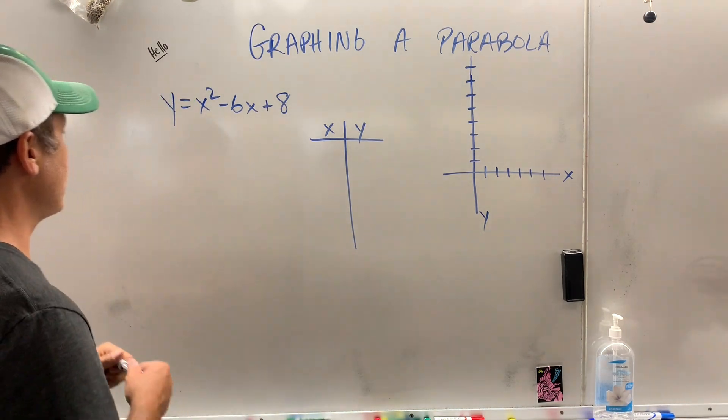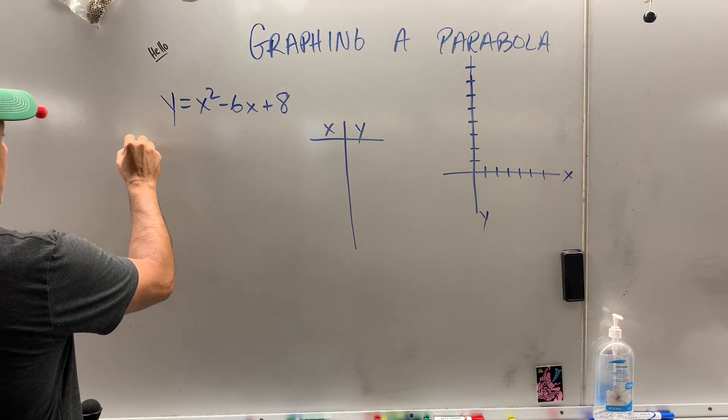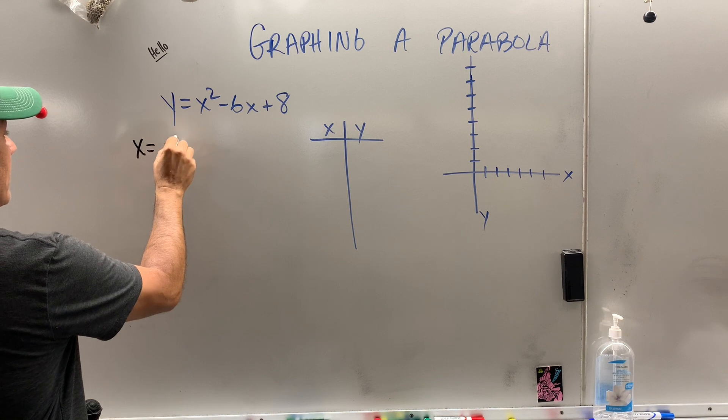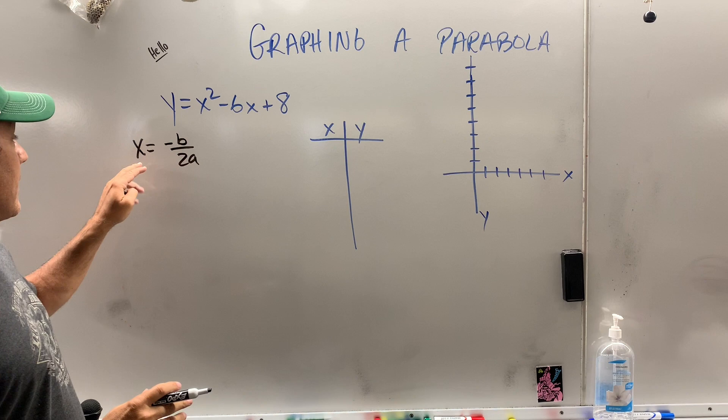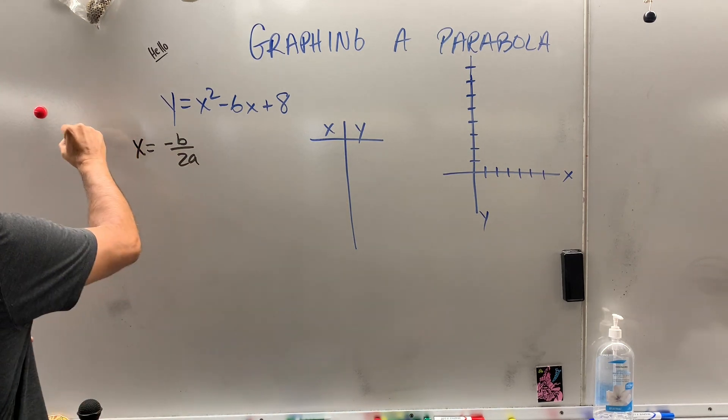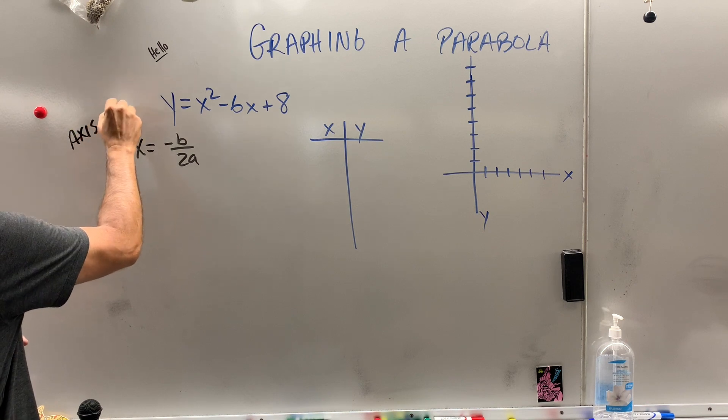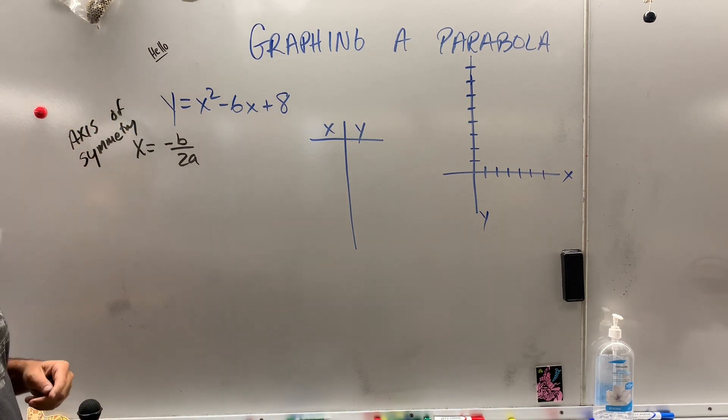The best way to do this, there is something called the axis of symmetry. There is a formula, x equals negative b over 2a. This is a formula. It's an equation of a line. This is the axis of symmetry.